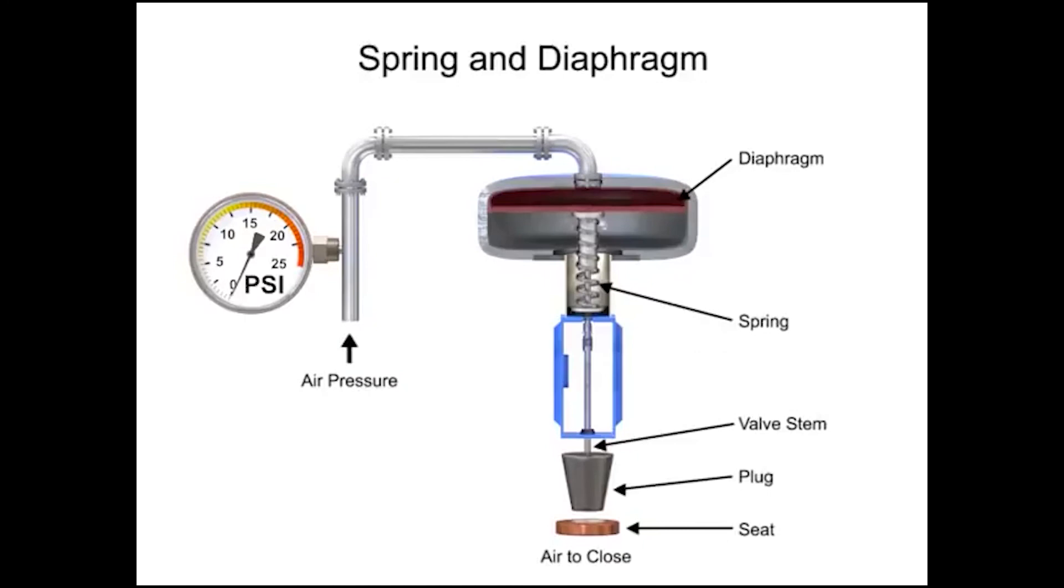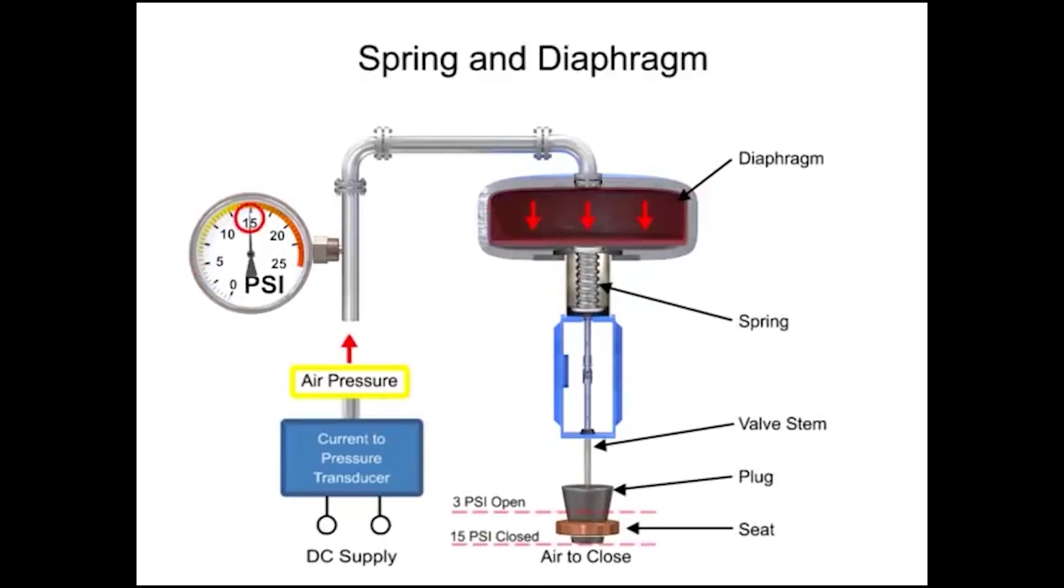To vary the position of the restrictor and flow through the valve, a current to pressure transducer can be used to provide a 3 to 15 PSI signal to the diaphragm. At 3 PSI, the valve is maintained open and at 15 PSI, the valve is maintained closed. Pressures between the 3 to 15 PSI range proportionally change the flow of the valve. For example, a pressure of 9 PSI applied to the diaphragm moves the spring and valve stem to 50% of operating range.